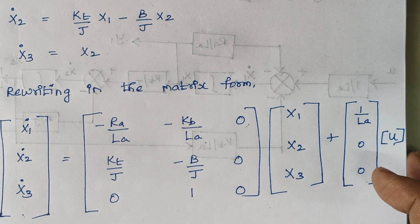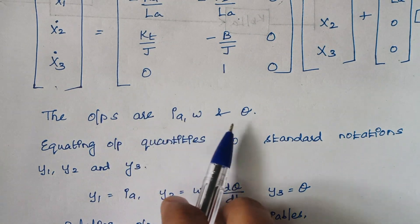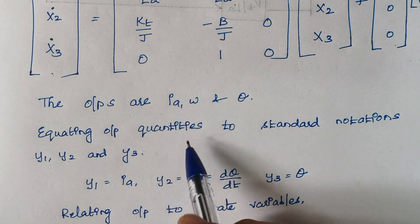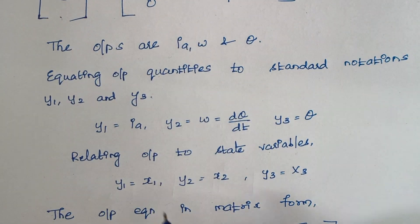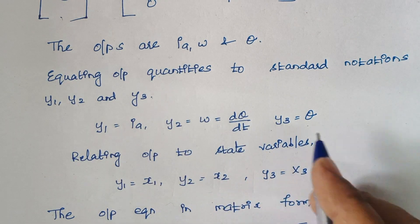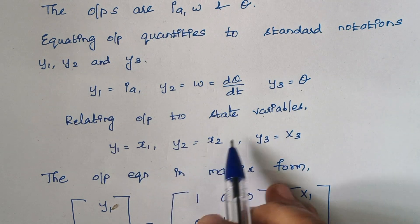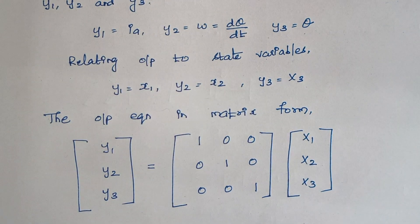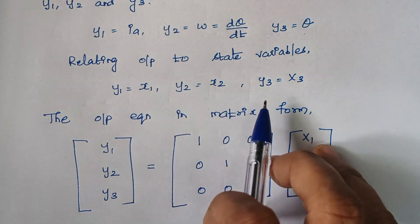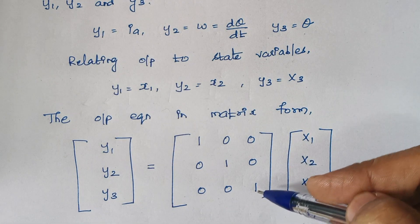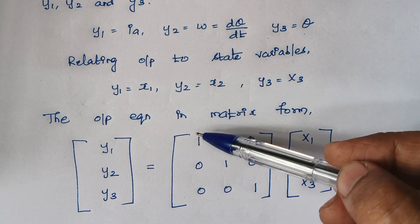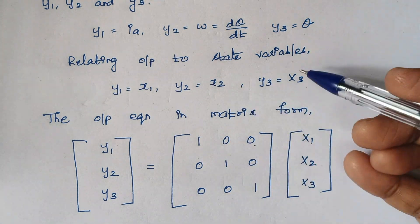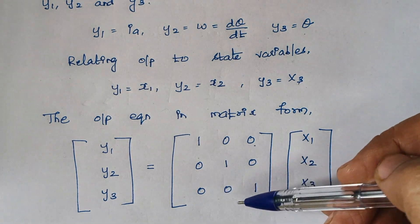Next we proceed to the output equation. IA, omega, and theta are the respective outputs, equated to Y1, Y2, and Y3 respectively. Writing in matrix form, since Y1 = X1, Y2 = X2, and Y3 = X3, we get a 3×3 identity-like matrix: the coefficient of X1 for Y1 is 1 (others 0); the coefficient of X2 for Y2 is 1 (others 0); the coefficient of X3 for Y3 is 1 (others 0).